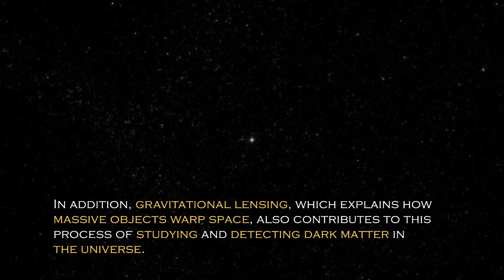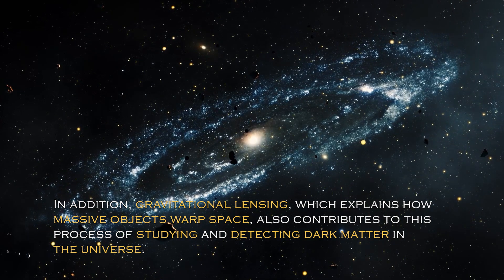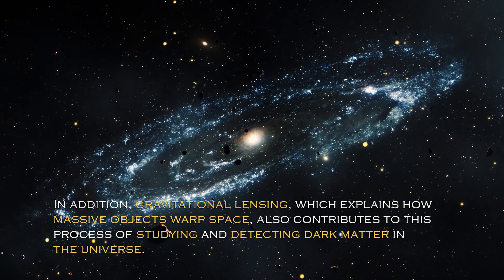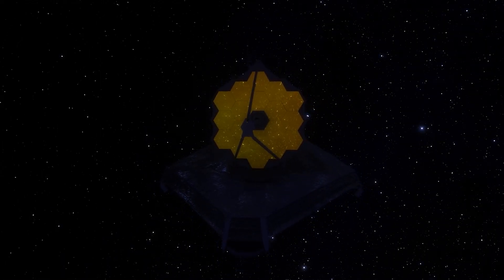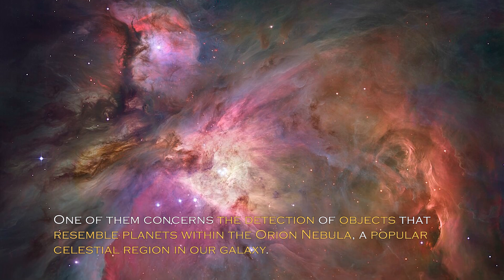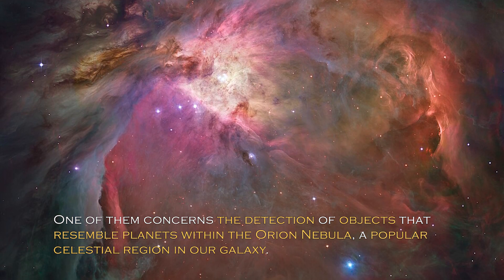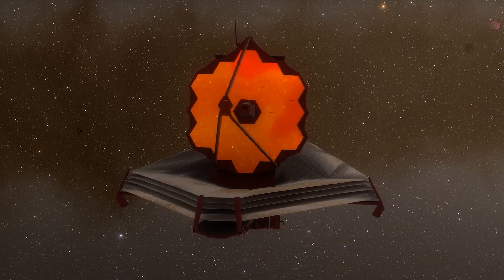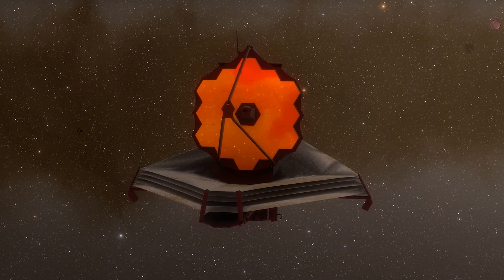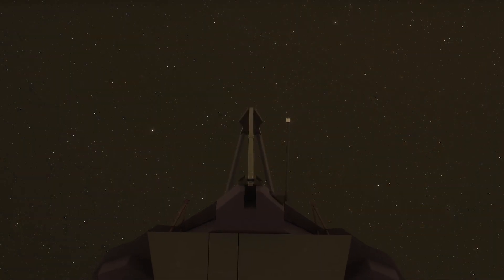In addition, gravitational lensing, which explains how massive objects warp space, also contributes to this process of studying and detecting dark matter in the universe. The James Webb telescope has recently made remarkable discoveries. One of them concerns the detection of objects that resemble planets within the Orion Nebula, a popular celestial region in our galaxy. Previous studies had not revealed such objects in this cosmic cloud of dust and gas until the James Webb made their detection possible.